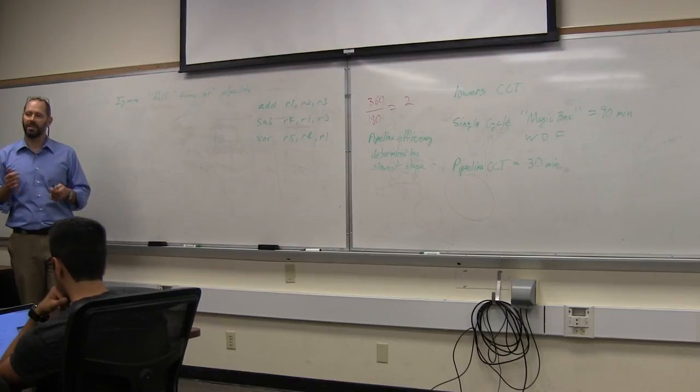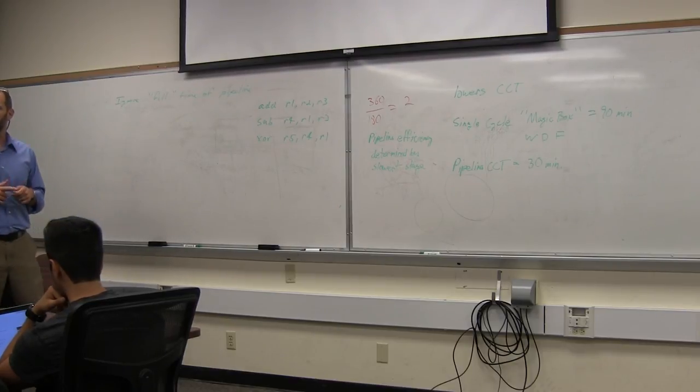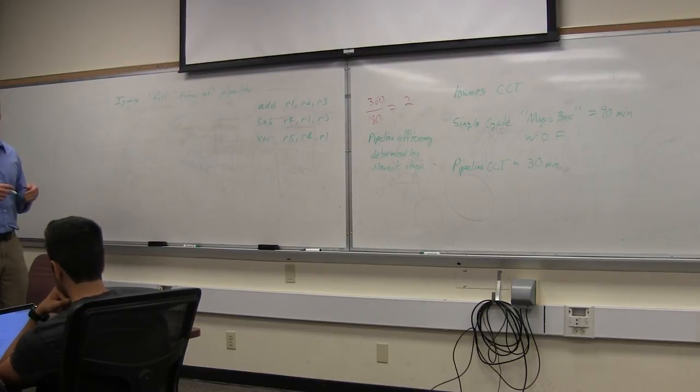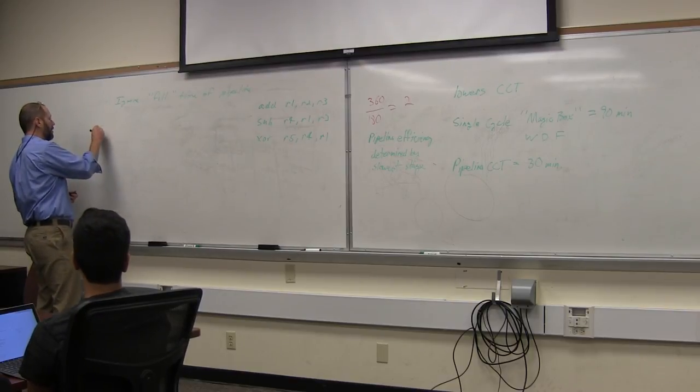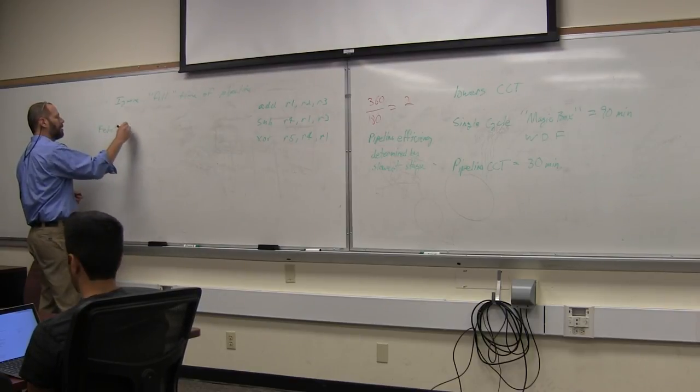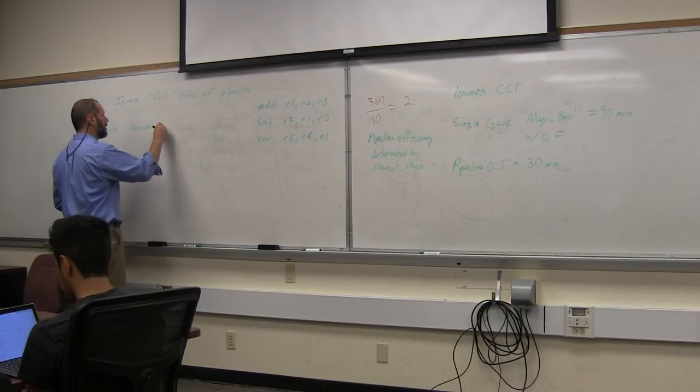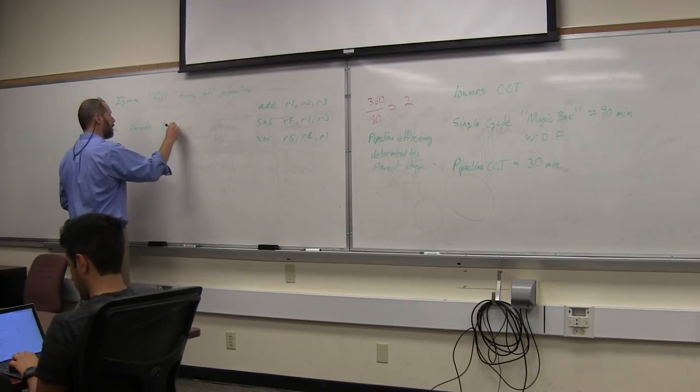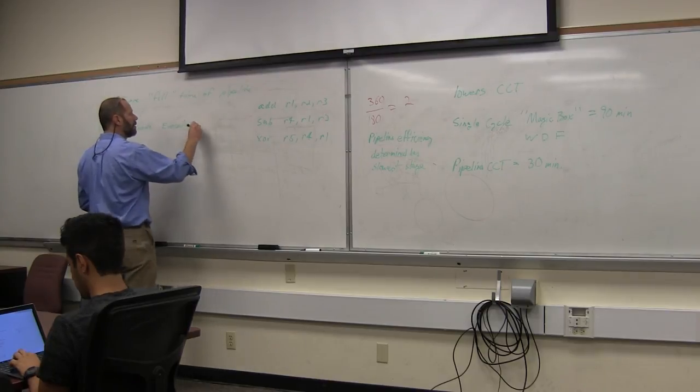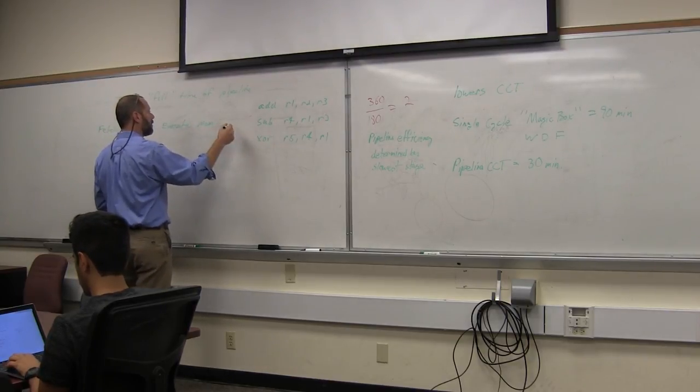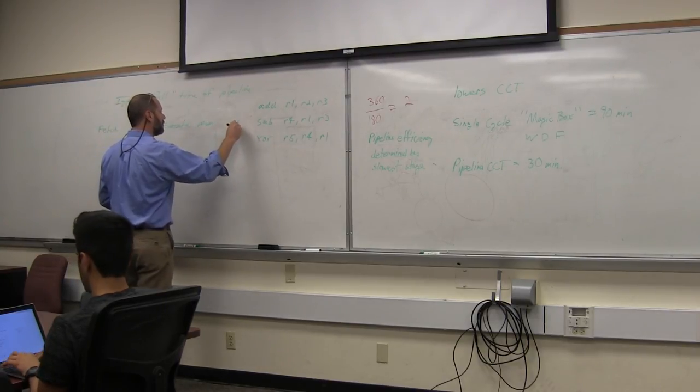I'll get to the specifics of the Raspberry Pi's pipeline in a bit, but let me start with our basic five-stage pipeline that we've been talking about in class. That's the fetch, decode, execute, memory, and write back.